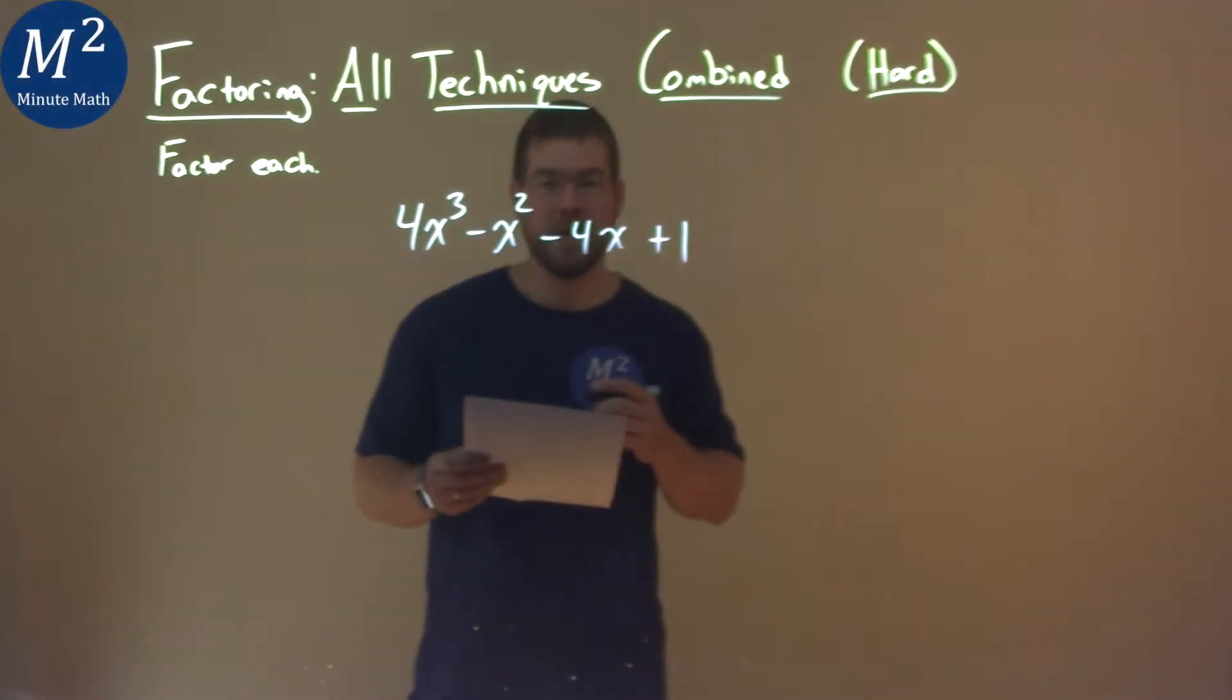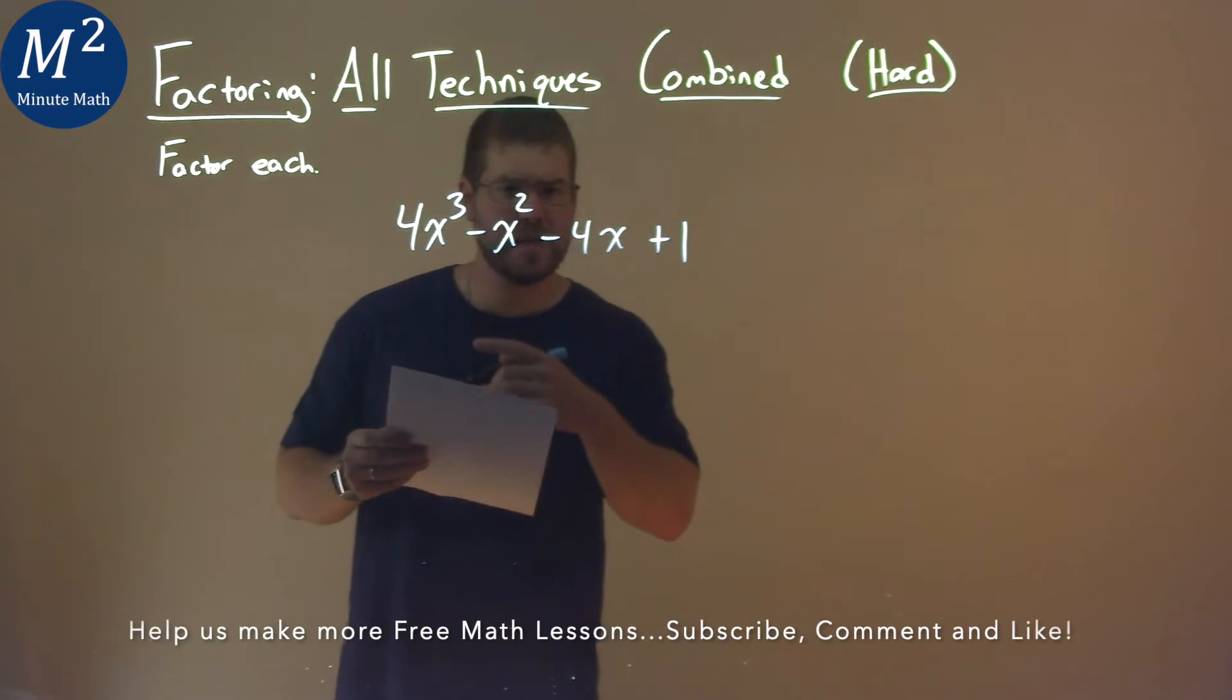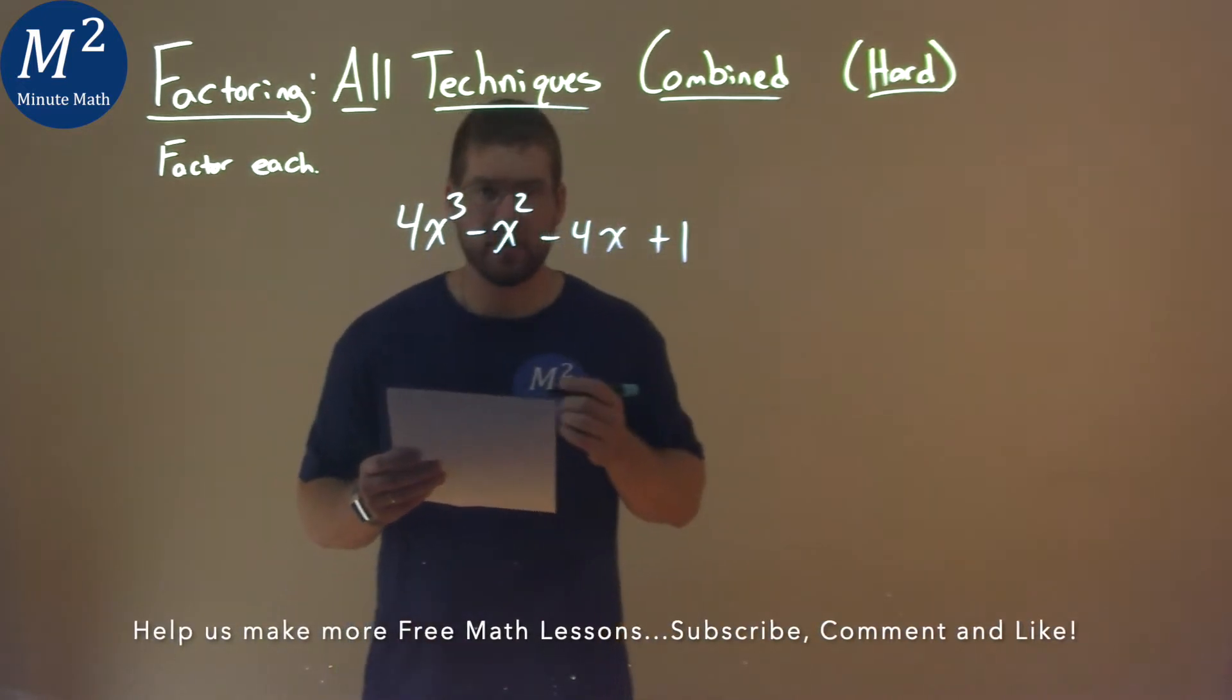We're given this problem right here, 4x to the 3rd minus x squared minus 4x plus 1, and we've got to factor this.